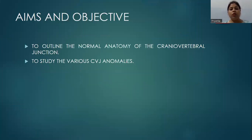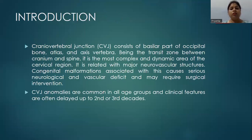The aim of this study is to outline the normal anatomy of the craniovertebral junction and to study the various CVJ anomalies. The craniovertebral junction consists of the basal part of the occipital bone, atlas and axis vertebra. Being the transit zone between the cranium and spine, it is the most complex and dynamic area of the cervical region, related with major neurovascular structures. Congenital malformations associated with this cause serious neurological and vascular deficit and may require surgical intervention. CVJ anomalies are common in all age groups and clinical features are often delayed up to the second or third decade.